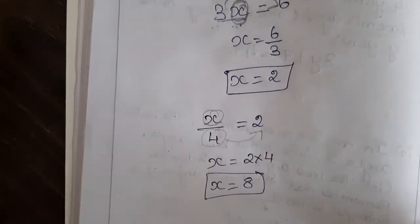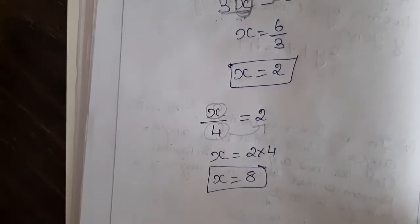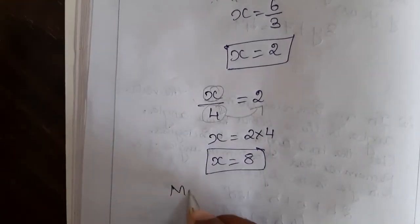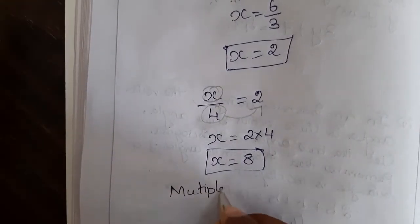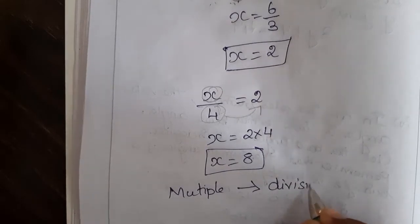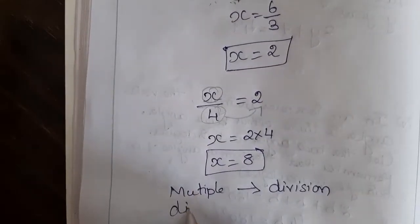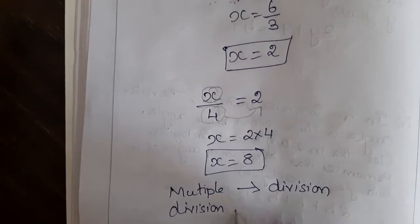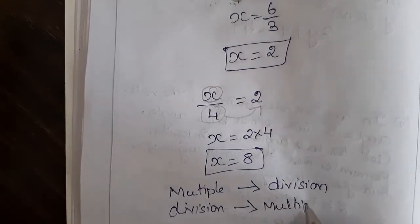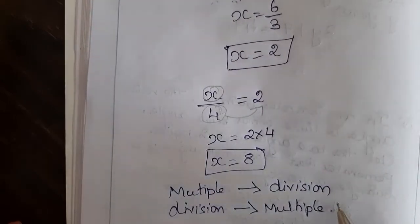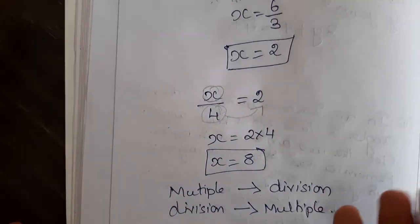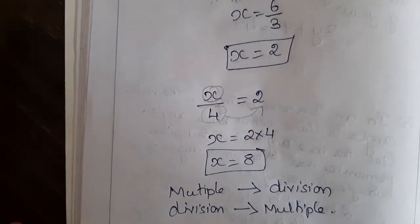Addition will change to subtraction and subtraction will change to addition. Likewise, multiplication will change to division, and division will change to multiplication when we are transposing to the other side.